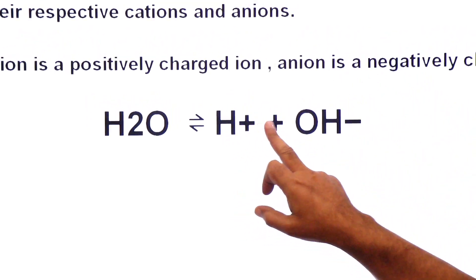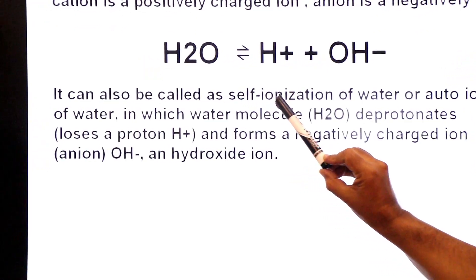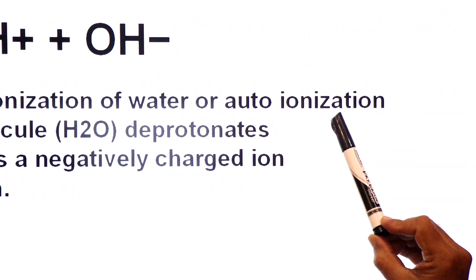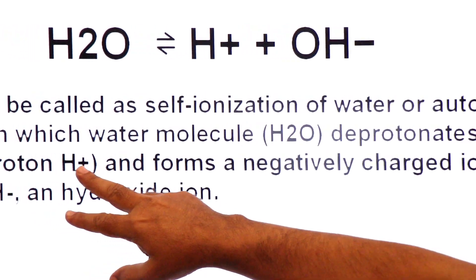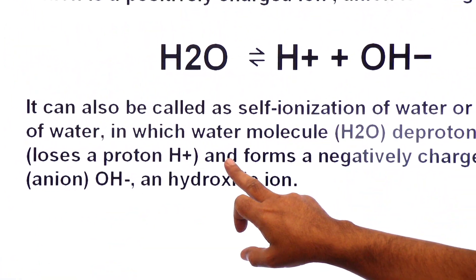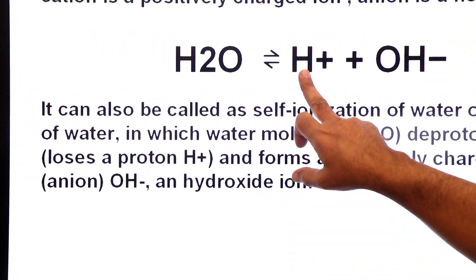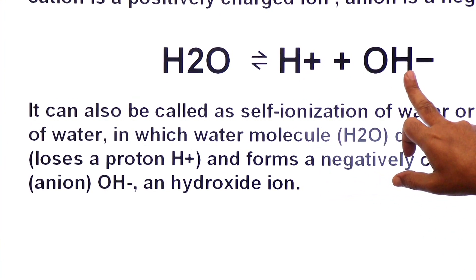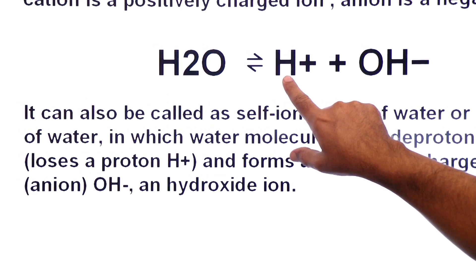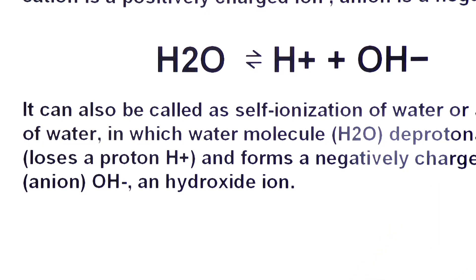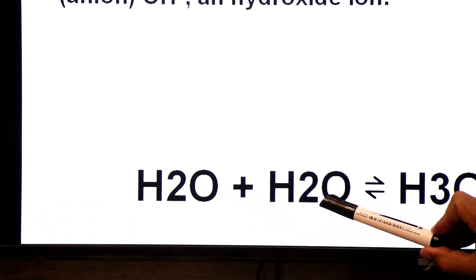Ionization of water forms hydronium ion and hydroxide ion. It can also be called self-ionization of water or auto-ionization of water, in which water molecule H2O deprotonates - deprotonates ka matlab loss of proton. Ek proton yahan se nikal gaya and forms negatively charged hydroxide ion. Yeh jo proton hai, yeh jo hydrogen ion hai, yeh doosre water ko protonate kar diya jayega. Jaise yahan se ek proton nikla to yeh add kar diya jayega.